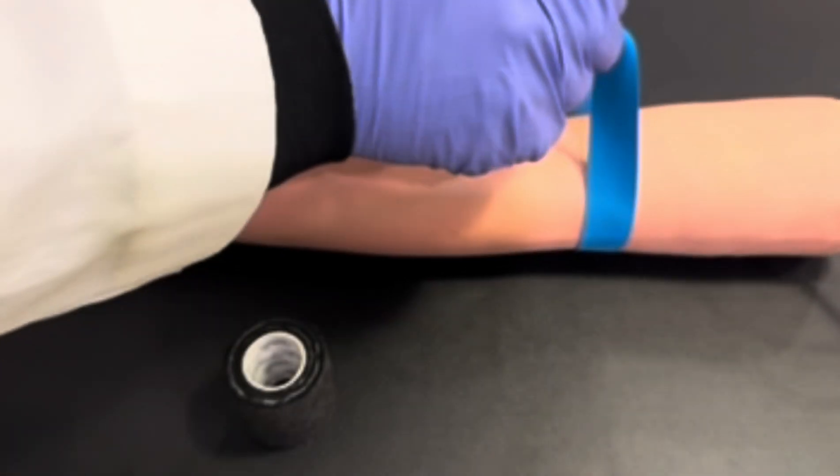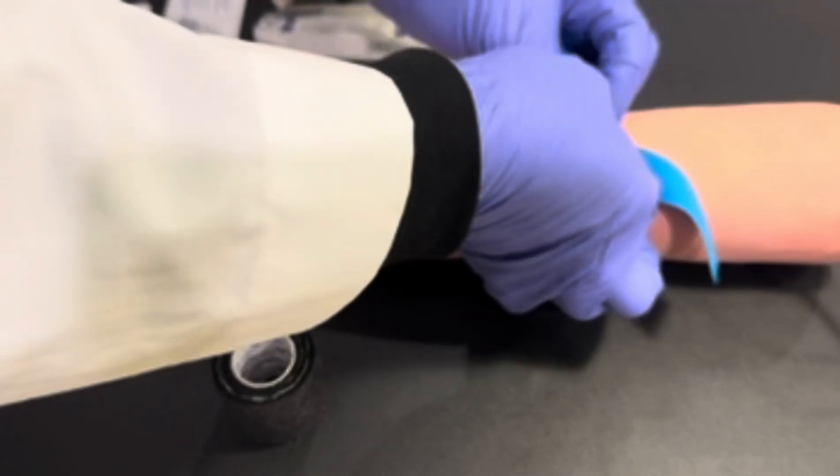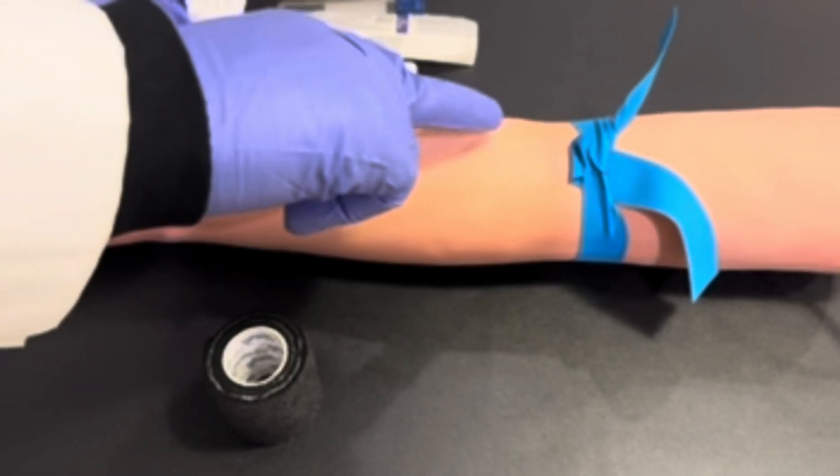Welcome back to another segment of Mastering Phlebotomy. Today we're going to perform a venipuncture using a butterfly syringe method.